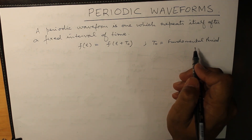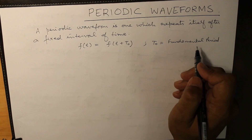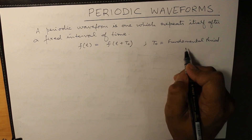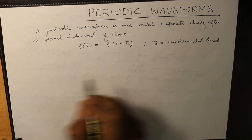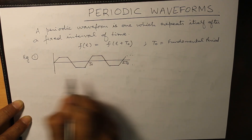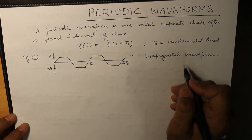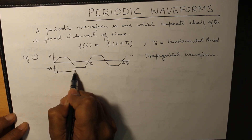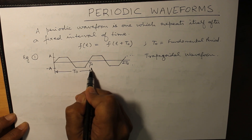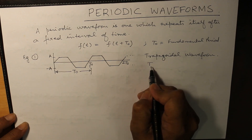This means that if any waveform is repeated from t0, then t0 is known as the fundamental period. For example, this is a trapezoidal waveform. A trapezoidal waveform is seen to repeat over the time period t0. t0 is the fundamental time.